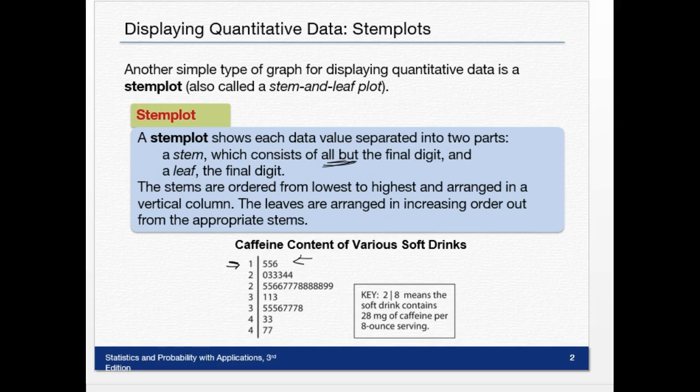When you do a stem-and-leaf plot, you have to have this key to define what it means. For example, 2 slash 8 means the soft drink contains 28 milligrams of caffeine per 8 ounce serving. Look at all the context that's given in the key—that's really important to include.